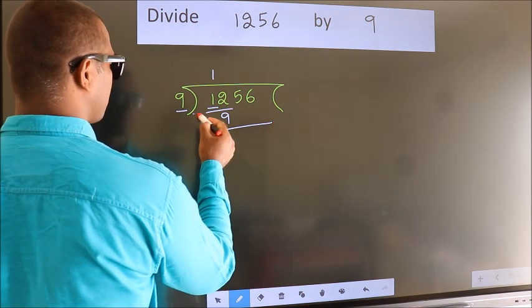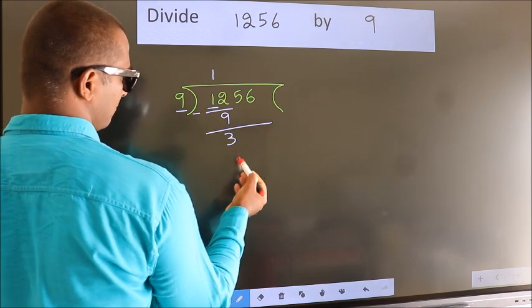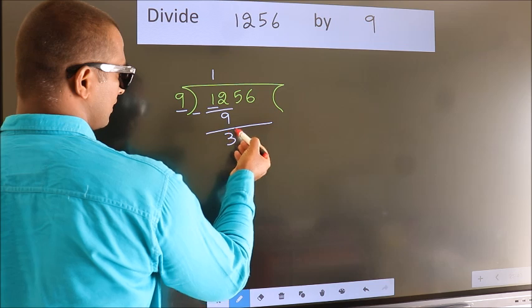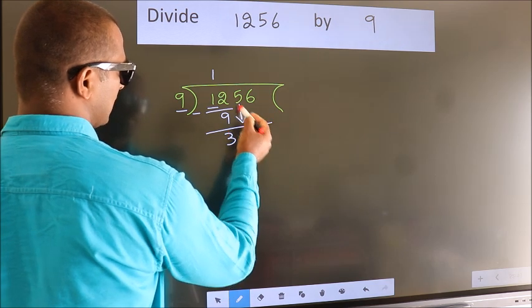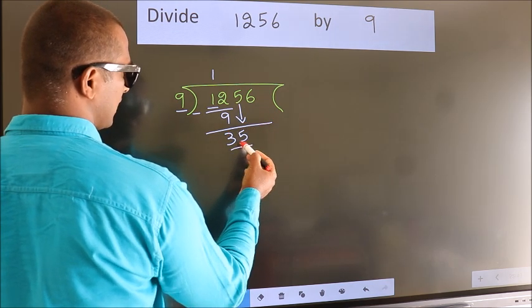Now we should subtract. We get 3. After this, bring down the beside number. So, 5 down. So, 35.